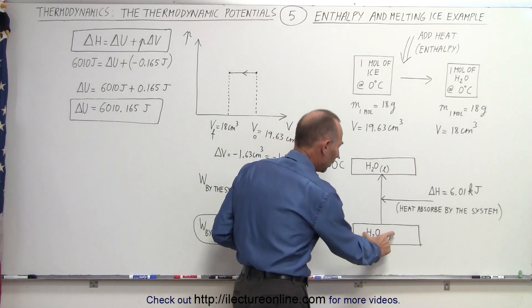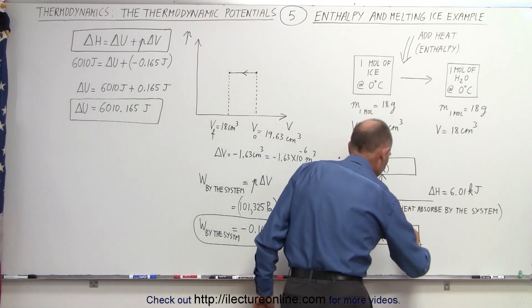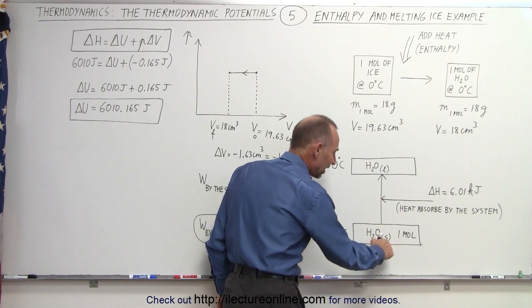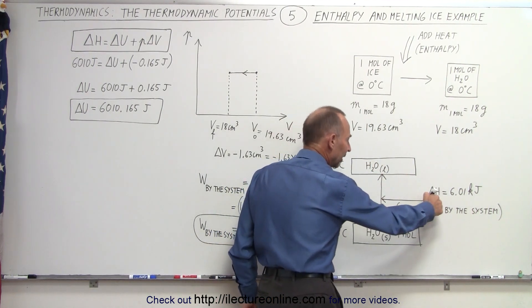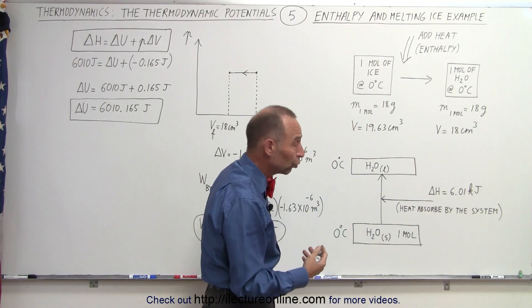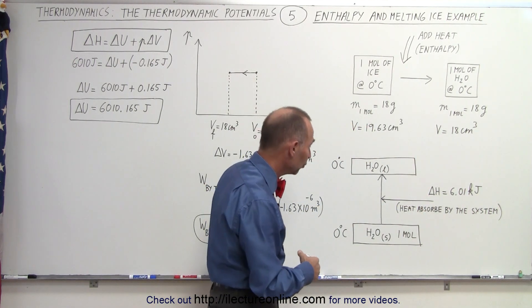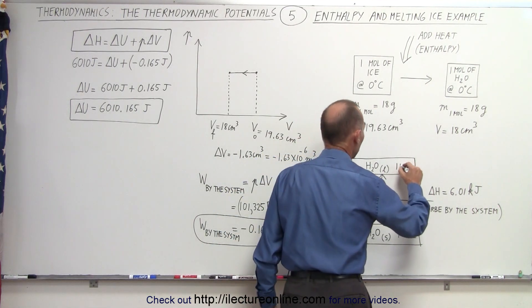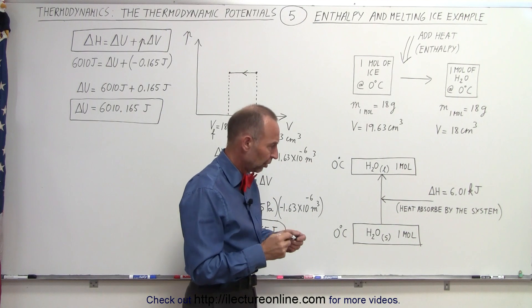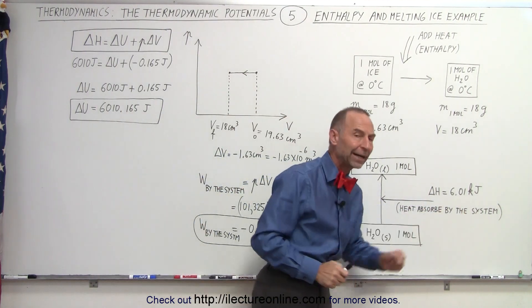We can pictorially see what happened here. We started with one mole of water in a frozen or solid state. We add heat, delta H required to do that is 6.01 kilojoules or 6,010 joules, and then we end up with one mole of liquid water at the same temperature. So it's heat absorbed by the system.